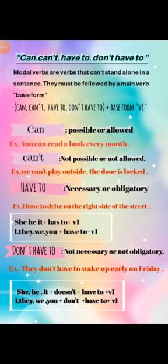Before we start, let's explain the grammar rule: can, can't, have to, and don't have to. Modal verbs are verbs that can't stand alone in a sentence — they must be followed by a main verb in base form. 'Can' means possible or allowed — for example, you can read a book every month. 'Can't' means not possible or not allowed — for example, we can't play outside because the door is locked.